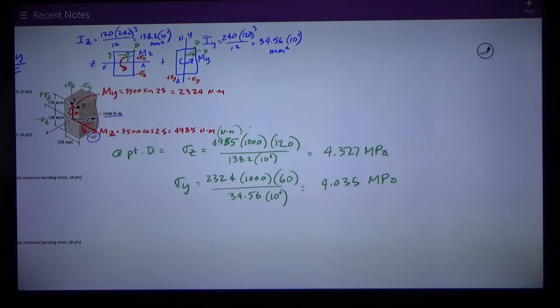Checking my units, I have newton meters times a thousand millimeters per meter and I have millimeters 120. On the bottom I have millimeters to the fourth. I've got newton millimeters squared on the top which cancels out two of the millimeters to the fourth so I get newton per millimeter squared which is megapascal.